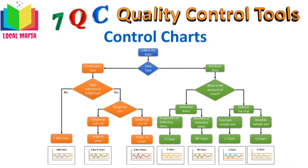When deciding which chart to use: if your data is continuous and you cannot subgroup it, the best chart is the IMR chart. If you can subgroup it and the subgroup size is less than 8, use the X-bar and R-bar chart. If the subgroup size is more than 8, use the X-bar and S chart. For attribute data focused on defective items, the P chart plots the fraction defective over time and the subgroup size does not have to be the same each time. The NP chart plots the number of defectives over time, but the subgroup size must remain constant.